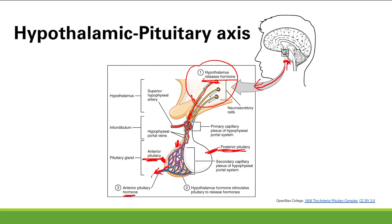The posterior pituitary is going to be a little different. The hypothalamus will make hormones destined for the posterior pituitary, but these hormones are not going to act on it — they're going to become stored there. So the posterior pituitary is not going to make its own hormones; it's simply a storage place for hormones made in the hypothalamus, released when triggered.